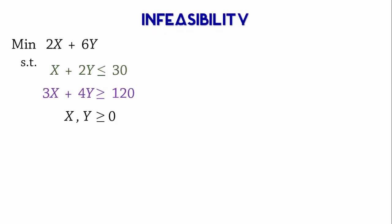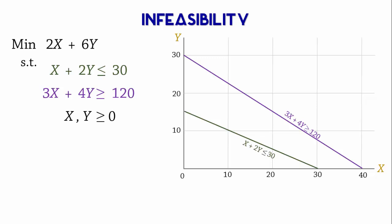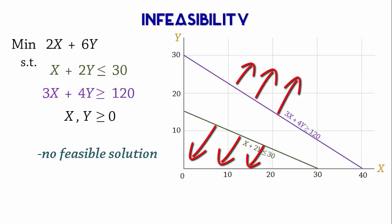The next special case is infeasibility. Consider this linear programming problem and its graph. The first constraint is a less than constraint and is satisfied in the region here towards the origin, while the second constraint is a greater than constraint satisfied here away from the origin. As you can see, there is no region satisfying both constraints at the same time. So, we say there is no feasible solution or no feasible region or we have a condition referred to as infeasibility.